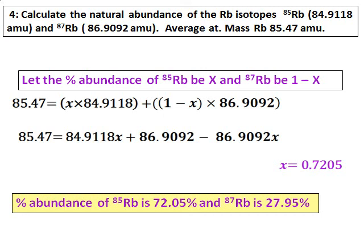Rubidium-87 comes out as 27.95%. The advantage of using x and (1 − x) is that the calculations become simpler, making solving easier. Just remember to multiply the final answer by 100. You can use either method — whichever is more convenient — and the answer will be the same.